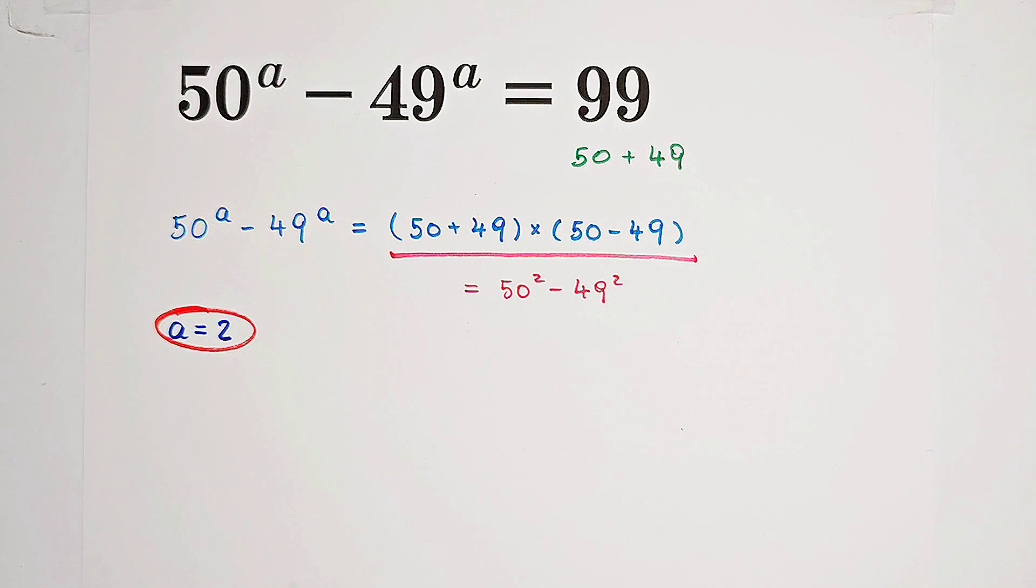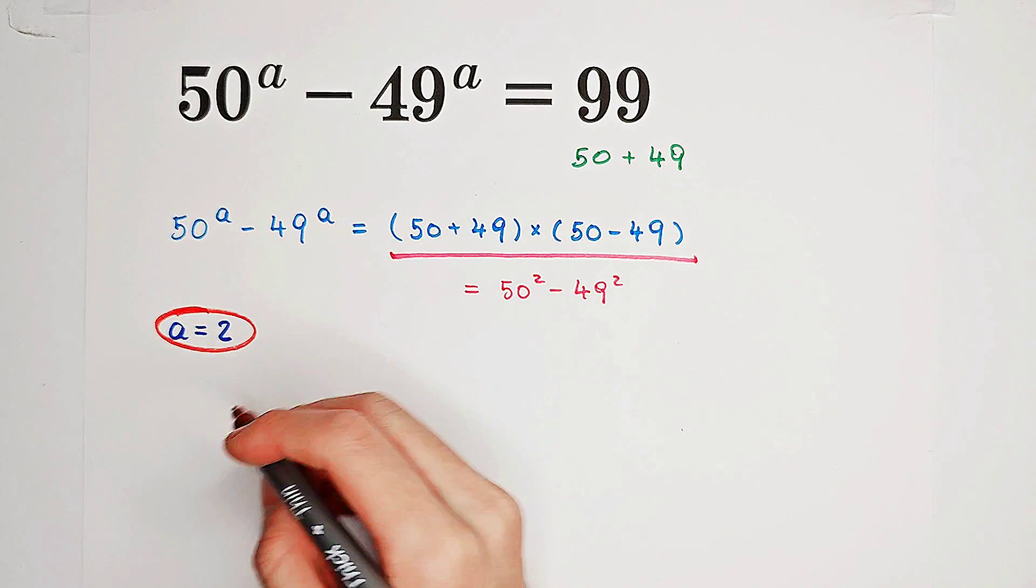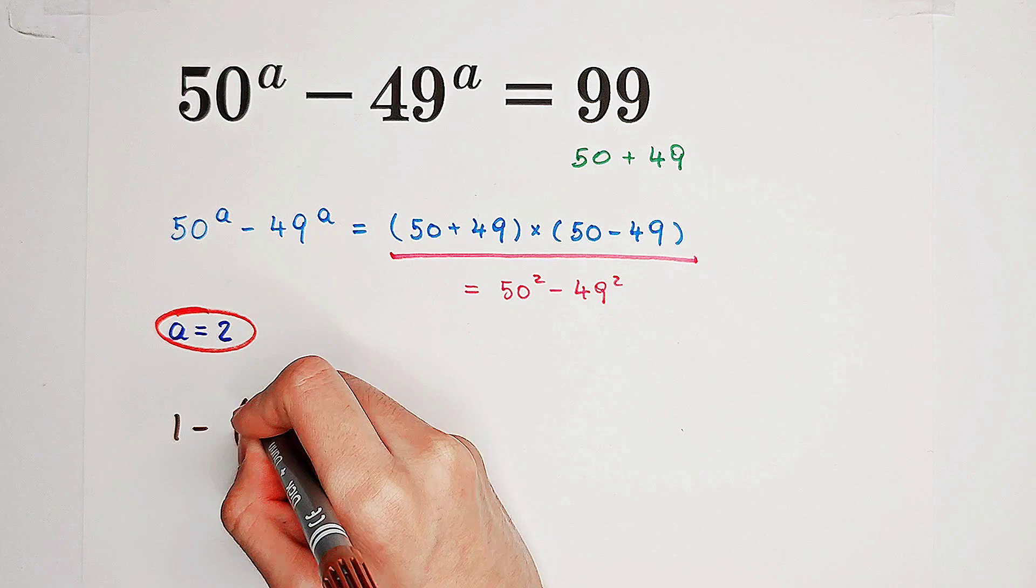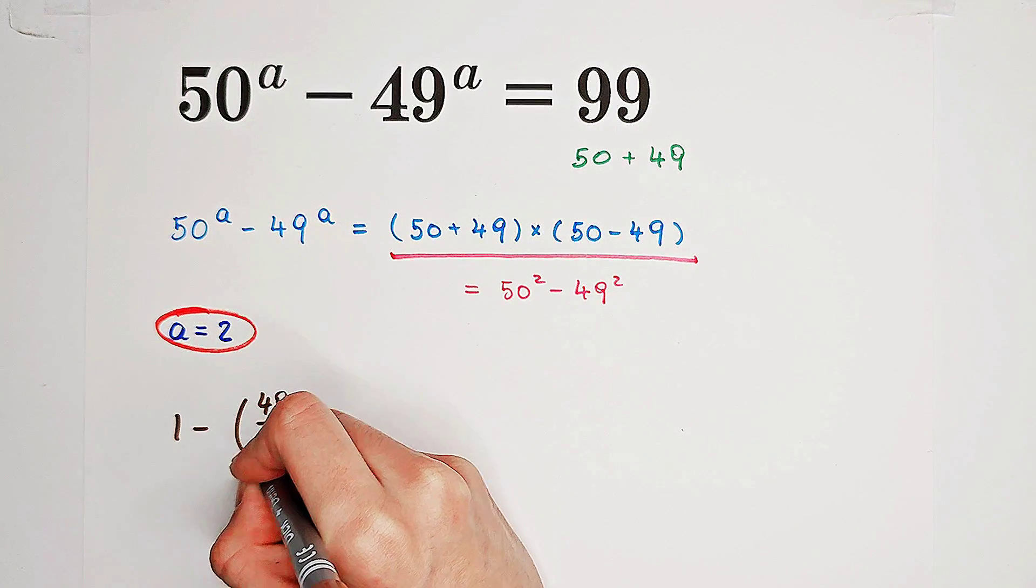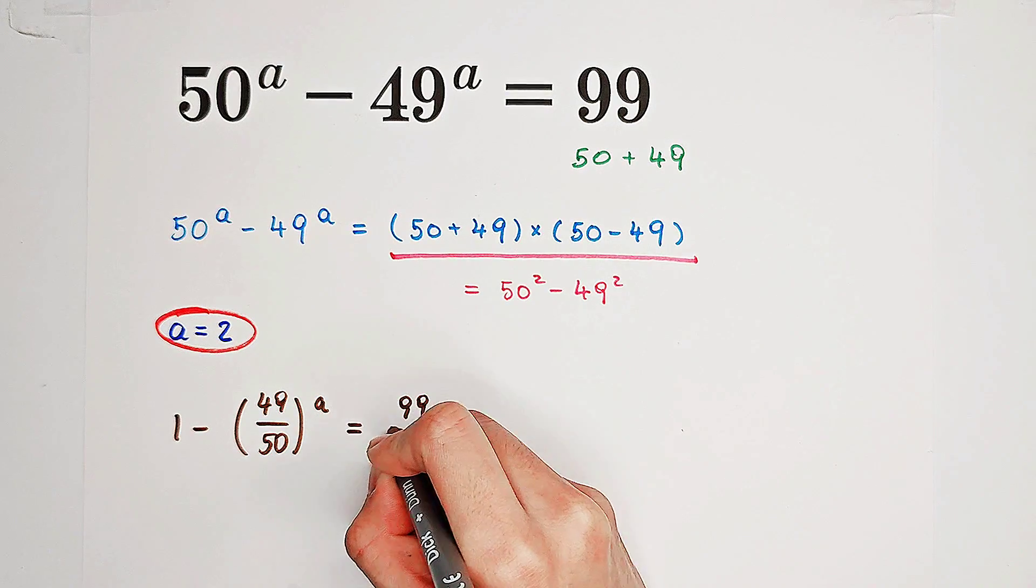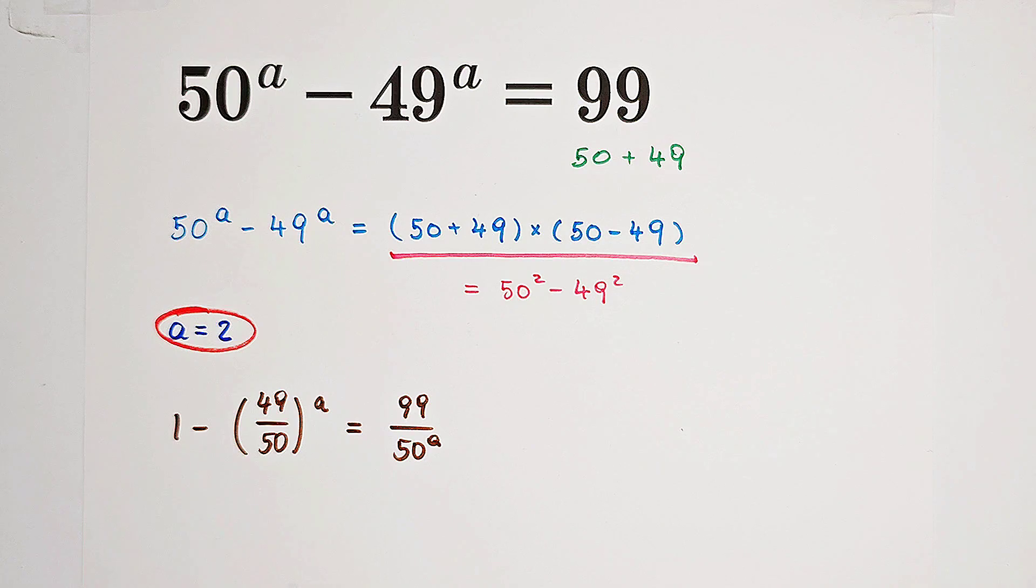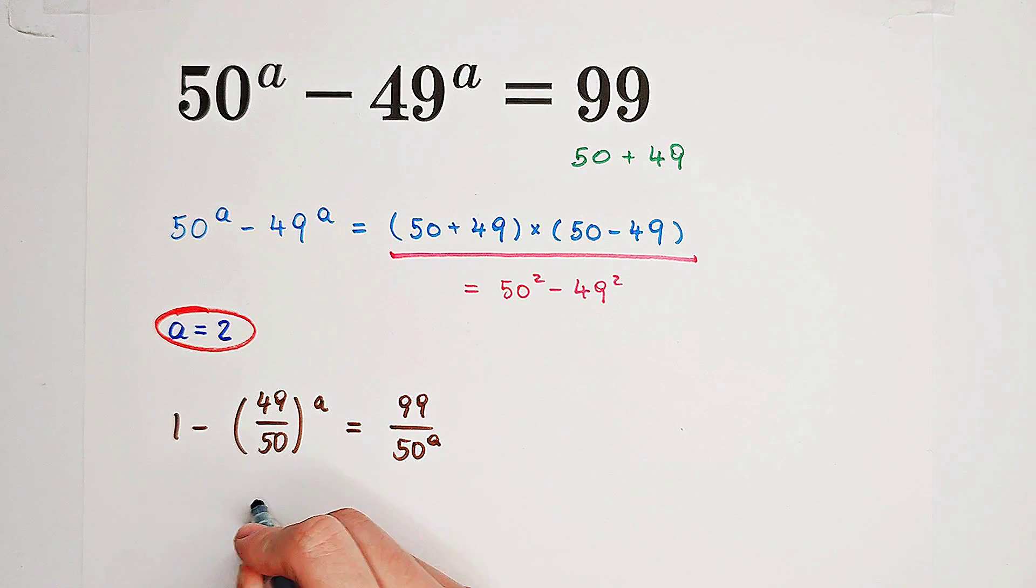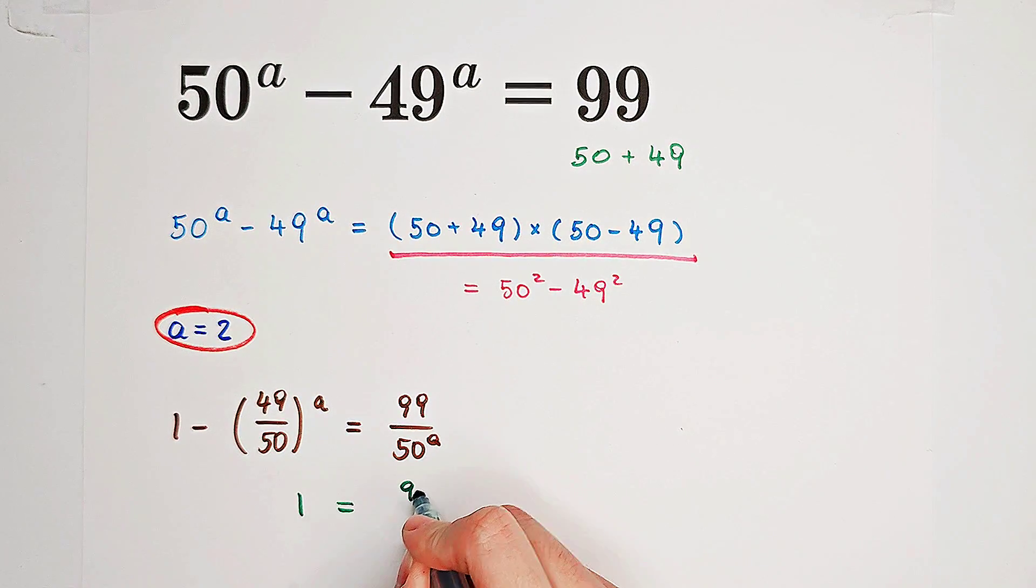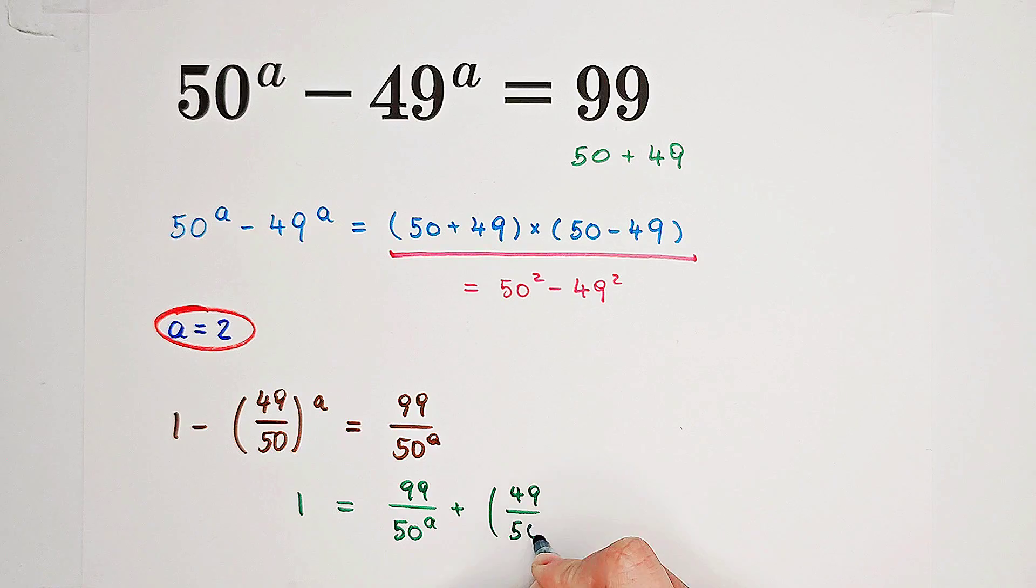So now, what I'm going to do is dividing the both sides by 50 to the power of A. Here we have 1 minus 49 over 50 all to the power of A equals 99 over 50 to the power of A. And this is equivalent to 1 equals 99 over 50 to the power of A plus 49 over 50 all to the power of A.